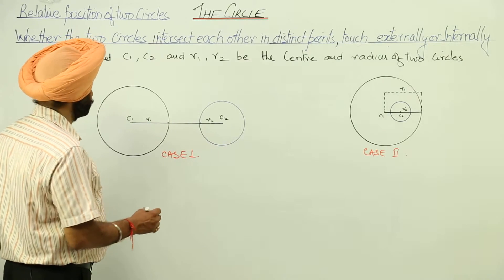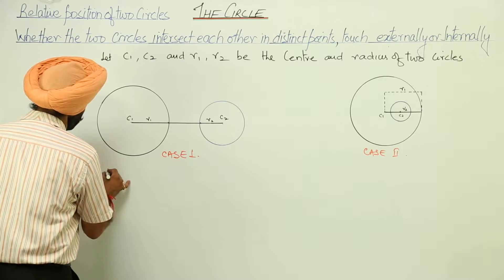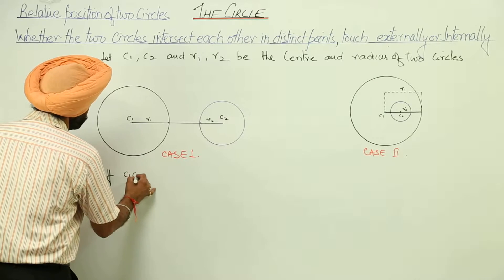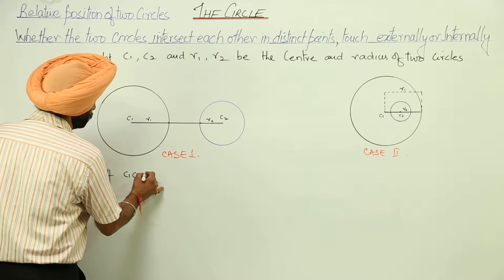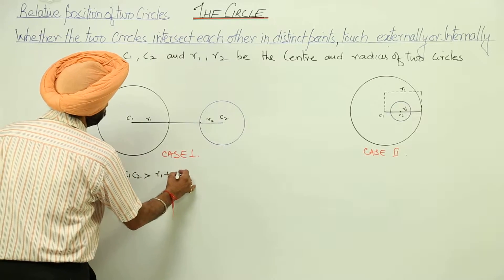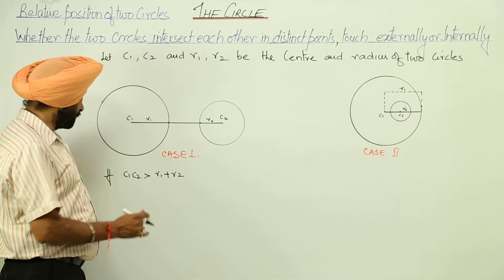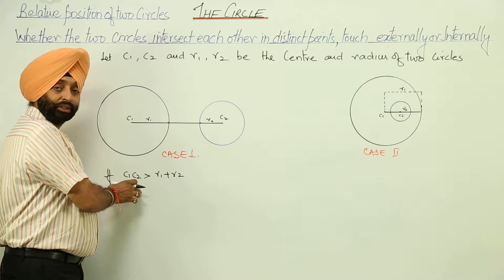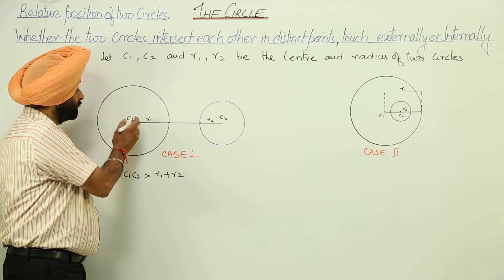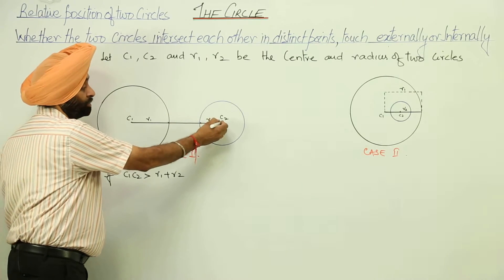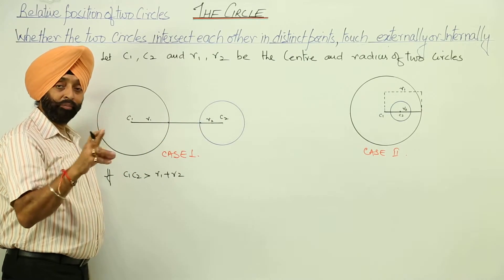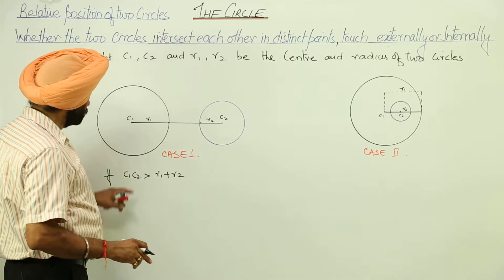Condition 1: if c1, c2 is greater than r1 plus r2. What is c1, c2? Just remember, c1, c2 is the distance formula between c1 and c2. Remember it is the distance formula.